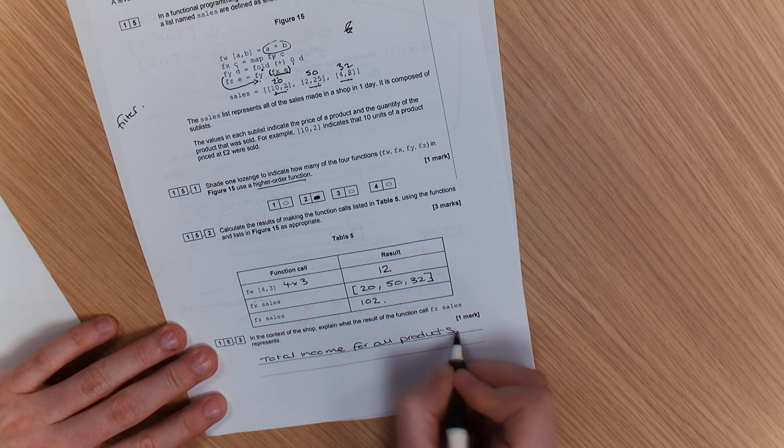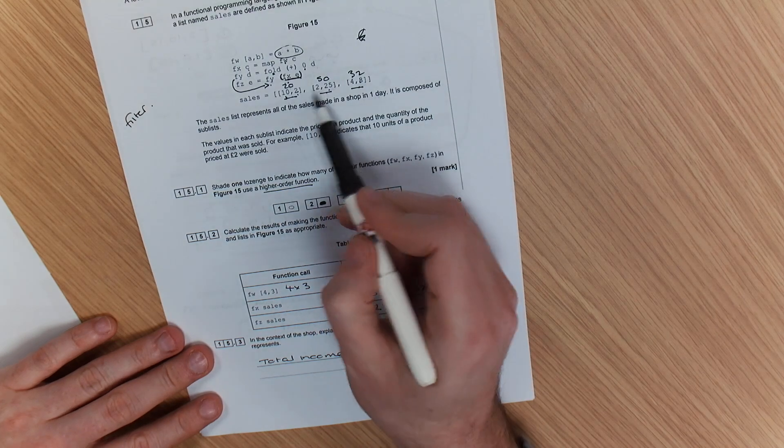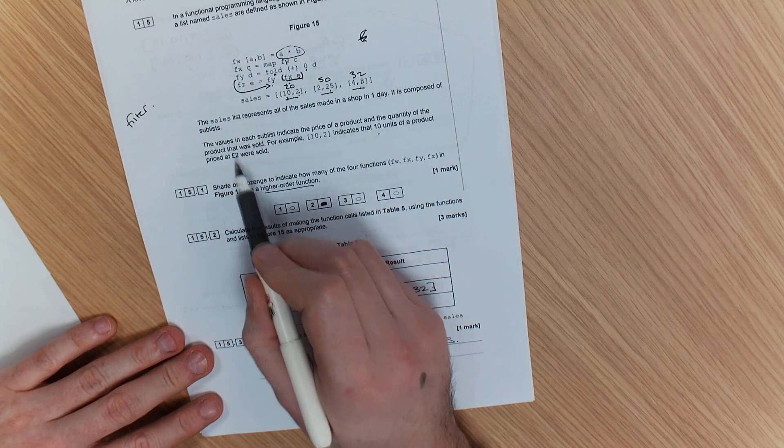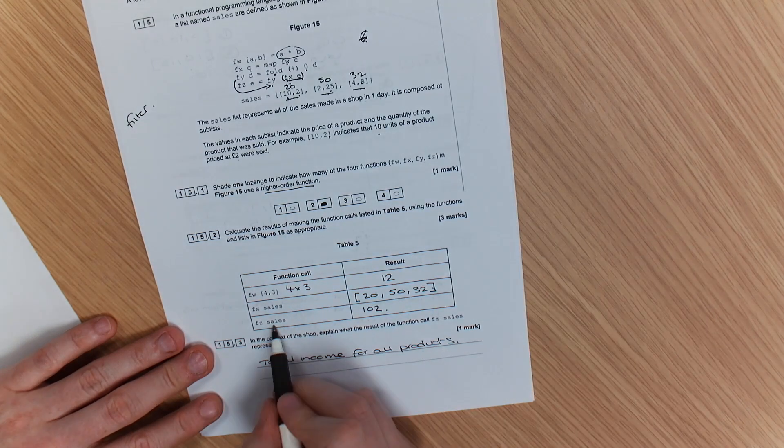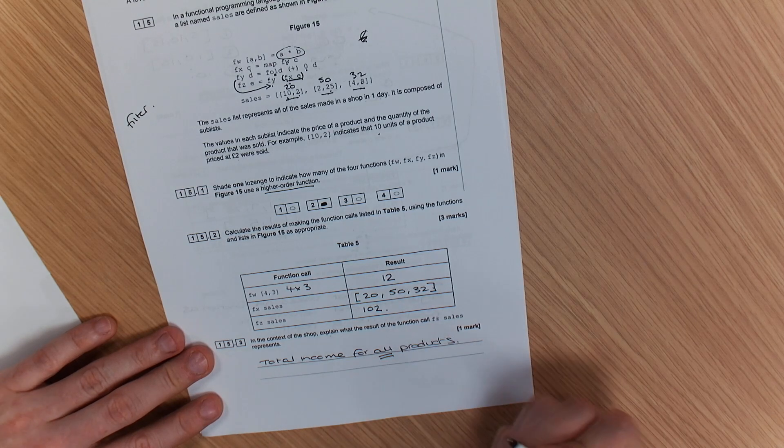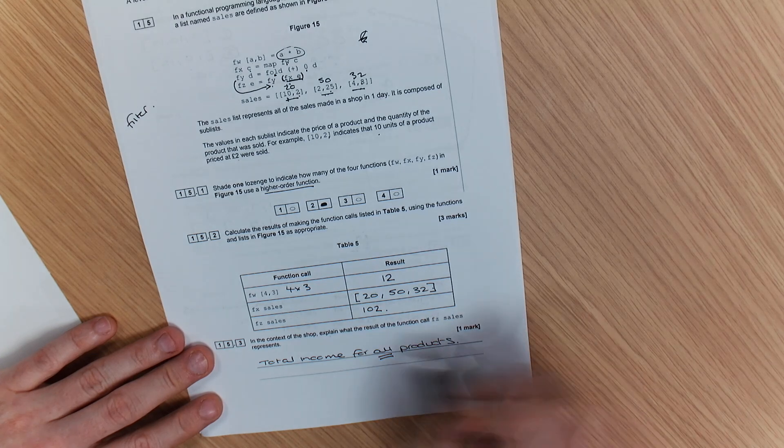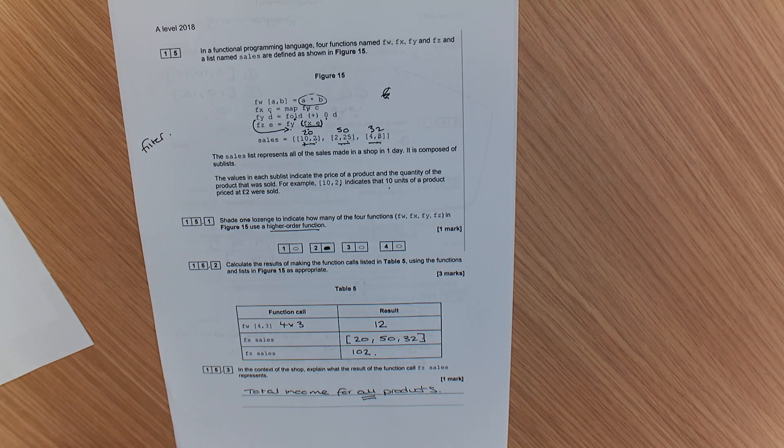With this, all you've got to do is show that you understand how this has worked. So, like they said here, 10 indicates 10 units of a product, 2 is how much they're sold. FZ(sales) is the total income for all products, not just one, it's doing them all. So that's how that has worked that out. So you can see why functional programming could be very useful in a shop environment.